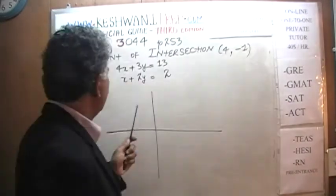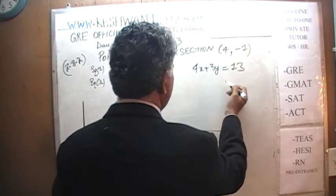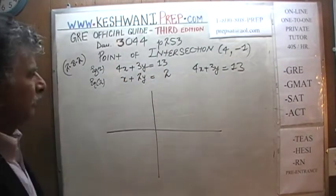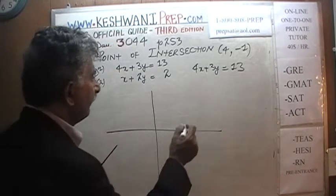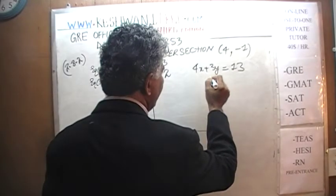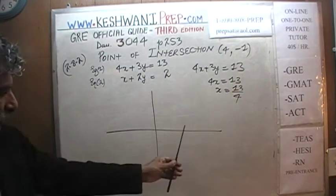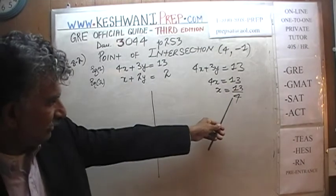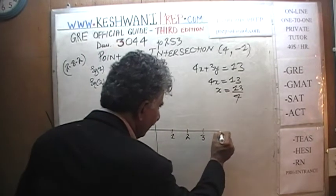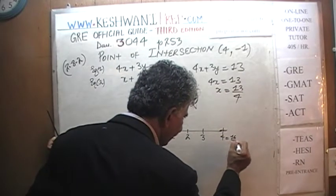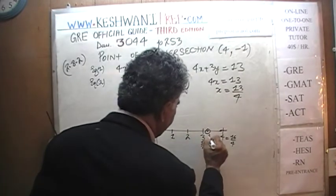Equation 1 is right here: 4x plus 3y equals 13. When y is equal to 0, 4x equals 13, and x equals 13 fourths. The x-intercept is 13 fourths. On the axis: 1, 2, 3, 4 — which is 16 fourths. So 12 fourths is 3 and 13 fourths is somewhere just past 3, right here.